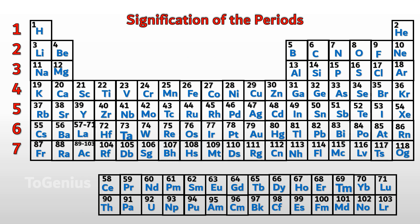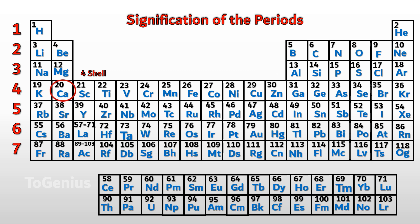Next, significance of periods. The period number indicates the number of electron shells or orbits present in an atom. Hydrogen is in period 1, so it has 1 electron shell. Boron is in period 2, so it has 2 electron shells. Sulfur is in period 3, so it has 3 electron shells. Calcium is in period 4, so it has 4 electron shells. From period 1 to period 7, each successive period adds one more electron shell.